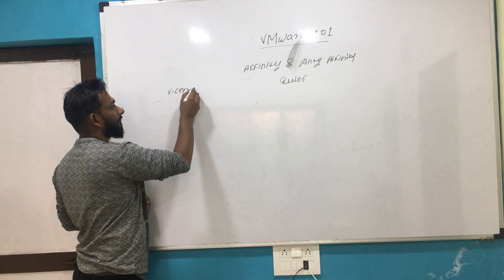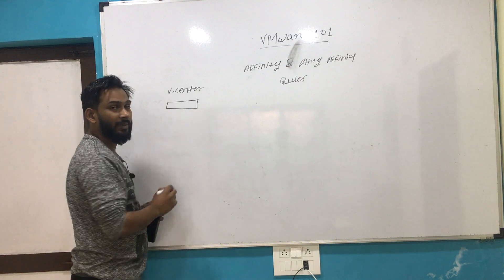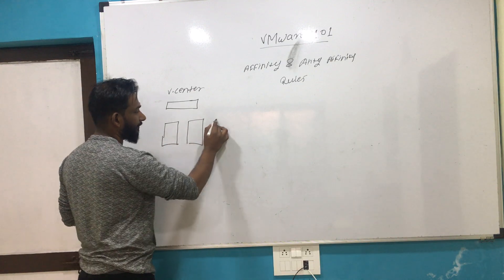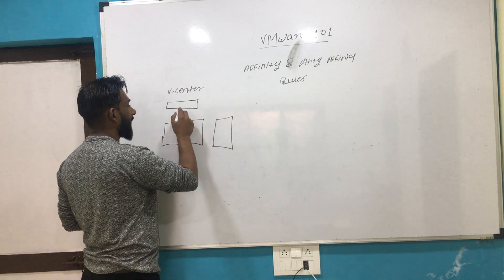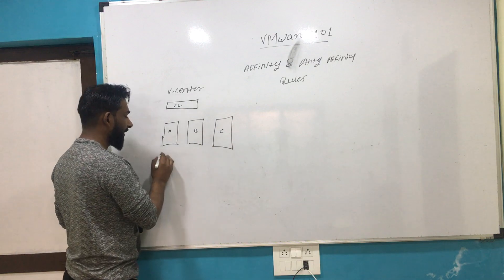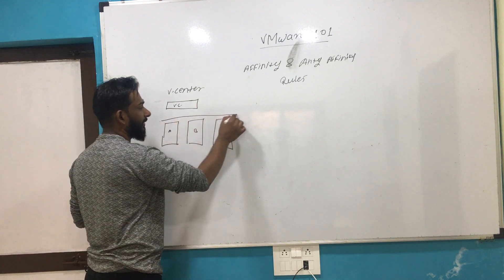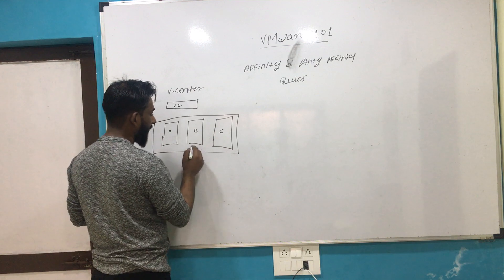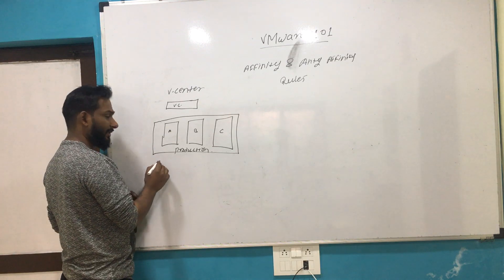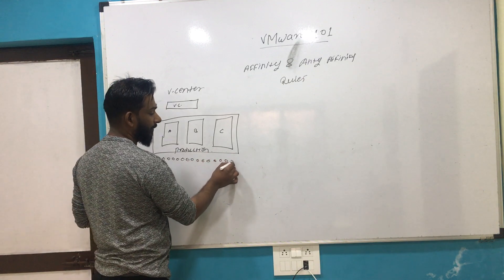Just to give a high-level overview of VMware DRS: we have a vCenter server for management purposes, and we have three ESXi hosts — Host A, Host B, and Host C. These three hosts are part of a cluster called the production cluster, and there are many VMs running on it.